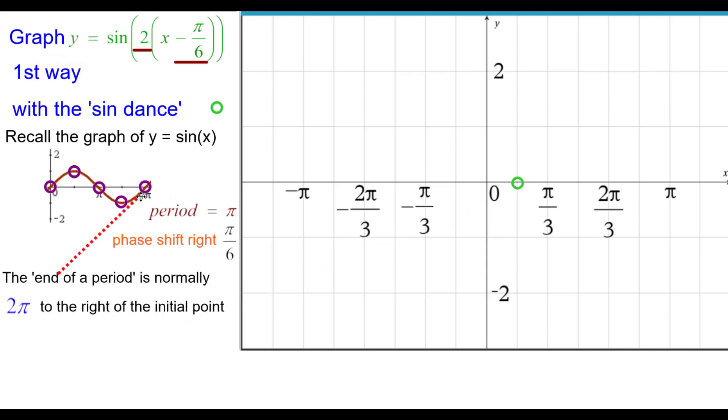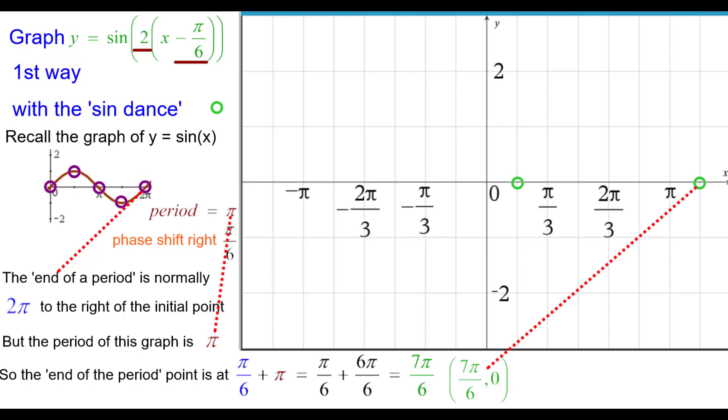The end of a period is normally at 2 pi away to the right of the initial point, one period. But the period for our graph is pi units, so we're going to have to start here and go pi to the right. So that will be at pi over 6 plus pi. Think of pi as 6 pi over 6. 1 and 6 makes 7 pi over 6. So at 7 pi over 6, 0 is a point of inflection.